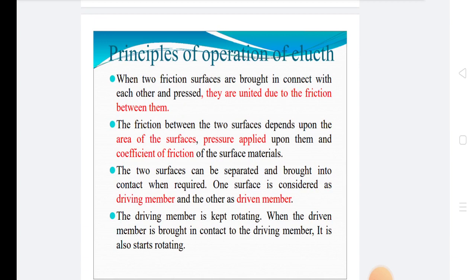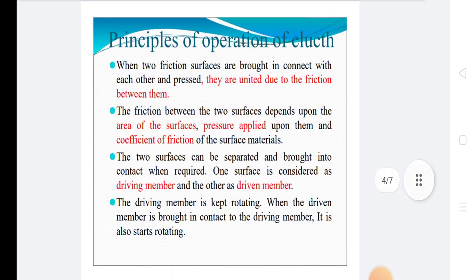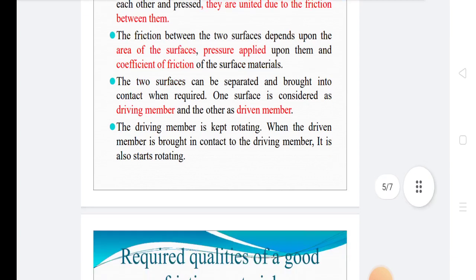Now we discuss principles of operation of clutches. When two friction surfaces are brought in contact with each other and pressed, they are united due to friction between them. The friction between the two surfaces depends upon the area of the surfaces, pressure applied upon them and coefficient of friction of the surface materials. The two surfaces can be separated and brought into contact when required. One shaft is considered as driving member and the other as driven member. The driving member is kept rotating. When the driven member is brought in contact to the driving member, it also starts rotating.